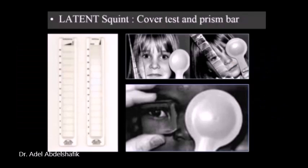Again, prisms can be used either base horizontal or vertical depending on the direction of squint and can be used together with the cover test. We repeat the cover test, change the power of the prism till there is no movement. Then we can know exactly the amount of latent squint.